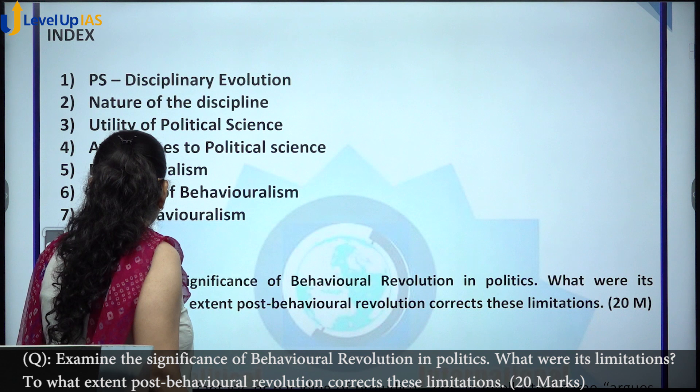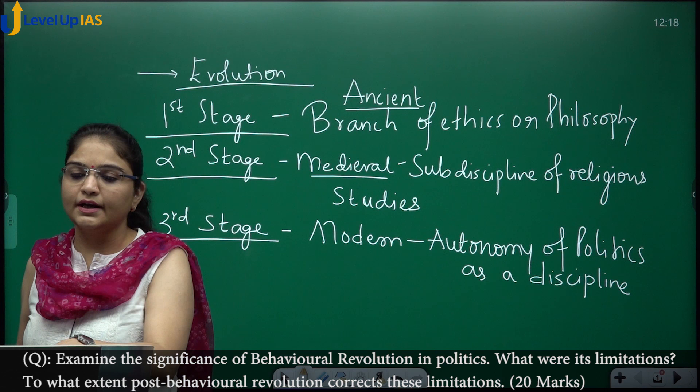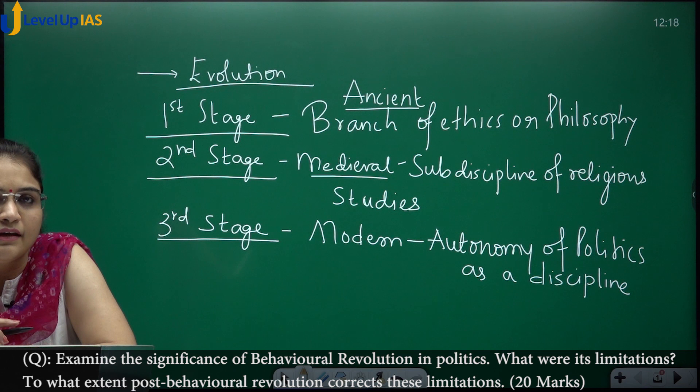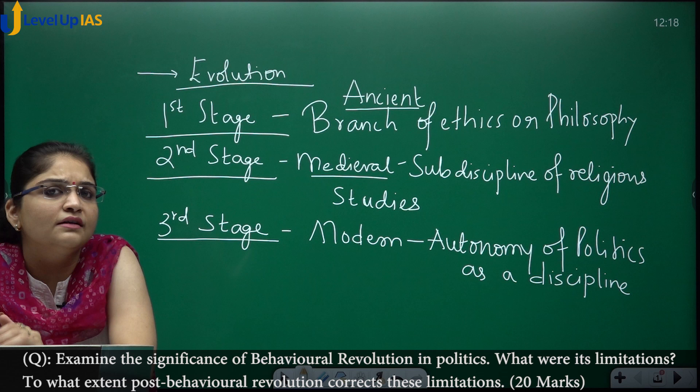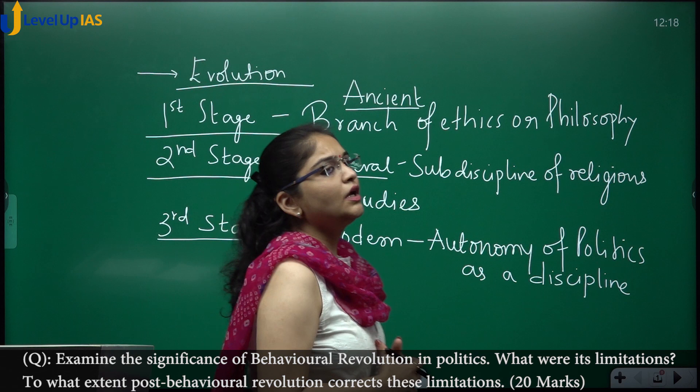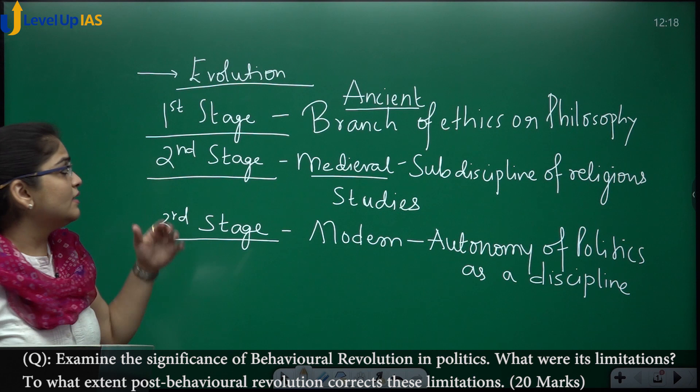First, let us understand political science. It is one of the most dynamic and vibrant disciplines. Aristotle considers it the master science because it studies all aspects of our life. It is also said to be architectonic in character, meaning it is the foundation on which other social sciences have largely been built.